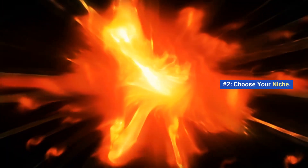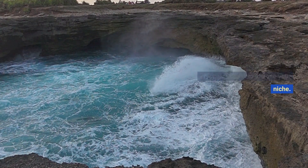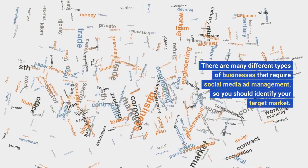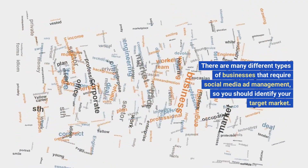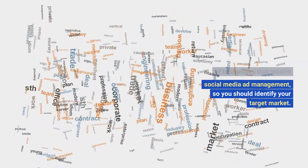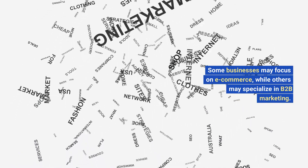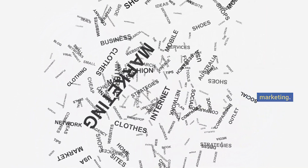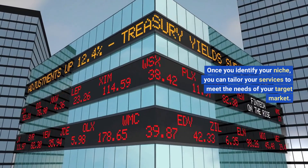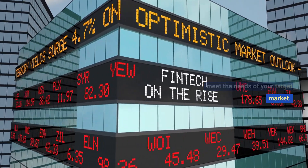Number two: choose your niche. The next step is to choose your niche. There are many different types of businesses that require social media ad management, so you should identify your target market. Some businesses may focus on e-commerce, while others may specialize in B2B marketing. Once you identify your niche, you can tailor your services to meet the needs of your target market.